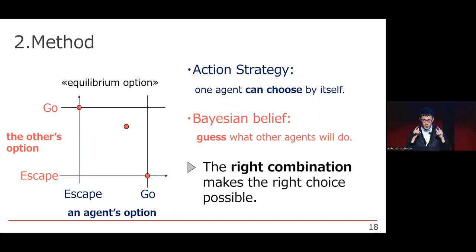However, we can substitute this invisible information by a believable way. The way is Bayesian belief. The method we adopted is to separate clearly the actual strategy which is controllable for an agent and the Bayesian belief which is uncontrollable for an agent. We guess others' choice and substitute in a reliable way.